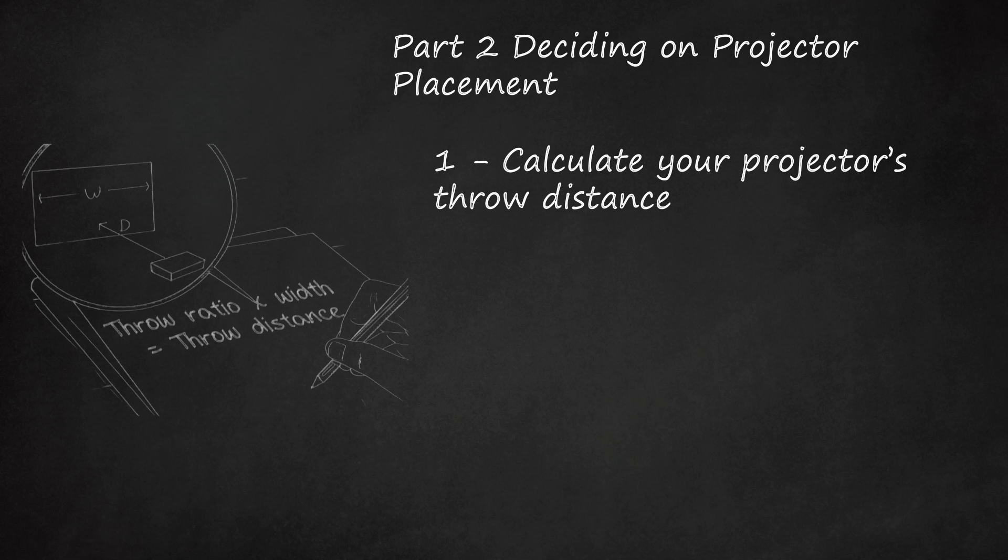To calculate how far away from your screen to place your projector, use the following formula: throw ratio × screen width = throw distance. The formula works for any unit of measurement—you can use inches, centimeters, feet, etc.